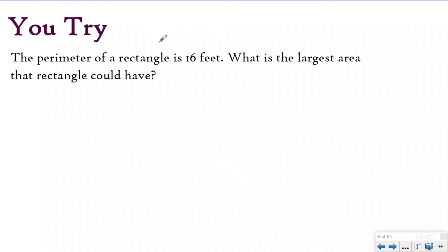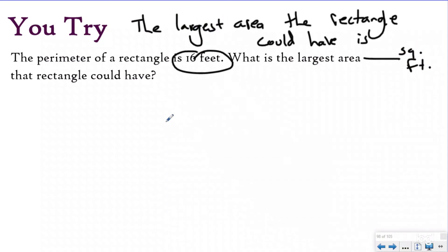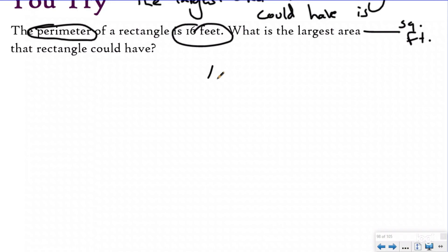The question says, what is the largest area the rectangle could have? My statement's going to say the largest area the rectangle could have is blank square feet, because I know my units are feet. So I'm going to go back, looking for anything about area or the rectangle. It told me the perimeter of the rectangle is 16. What is the largest area they could have? So I'm going to make the same chart here.